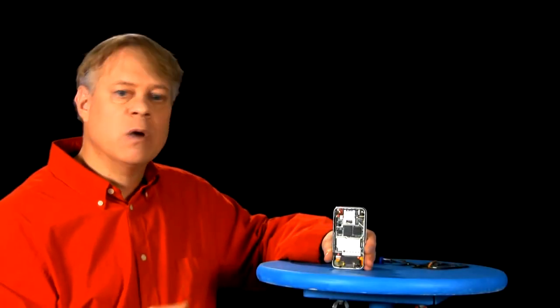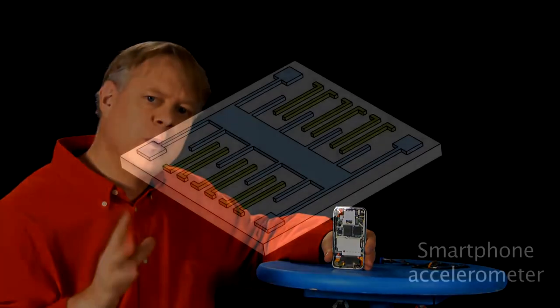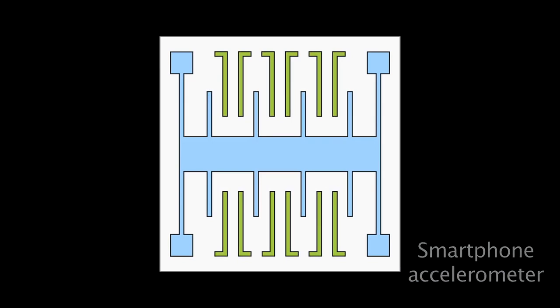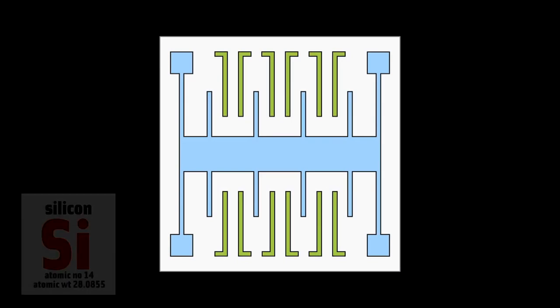So, how does this phone and this chip measure changes in gravity? Well, more complex than the simple ball and spring model, it has the same fundamental elements. Inside the chip, engineers have created a tiny accelerometer out of silicon.